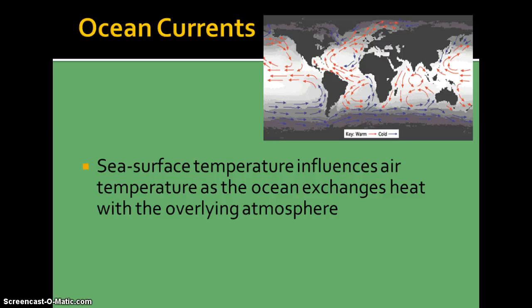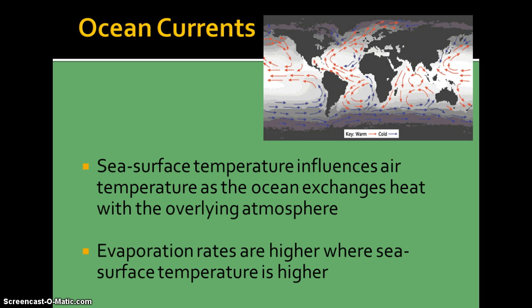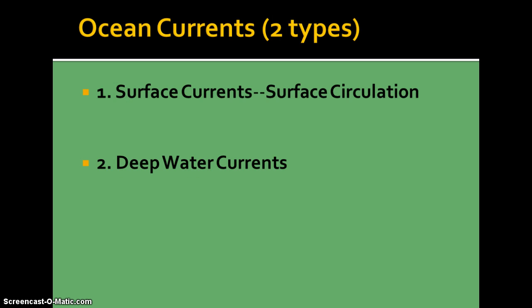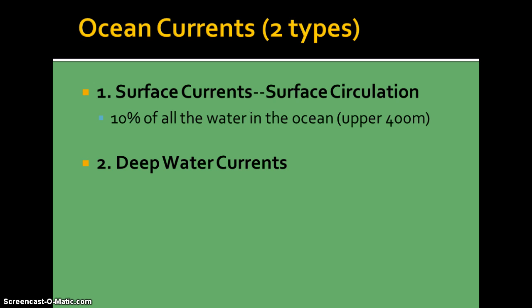Today's first topic we're going to look at are ocean currents. Sea surface temperature actually influences the air temperature, so our surface currents and wind patterns are very similar. We have warmer water at the equator that moves towards the poles where it cools down, sinks, and moves back to the equator. Around the equator you're going to have higher evaporation rates because sea surface temperature is higher where the sunlight is more direct. This creates the surface circulation — it's about 10%, just the upper 400 meters roughly of the ocean, that creates these surface currents.